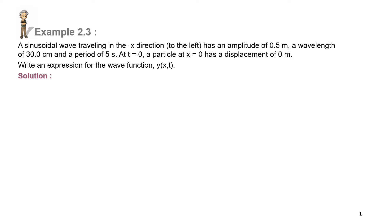Example 2.3. A sinusoidal wave traveling in negative direction, which means to the left, has an amplitude of 0.5 meter, a wavelength of 30 centimeter, and period of 5 second. At t is equal to 0, a particle at x is equal to 0 has a displacement of 0 meter. So, the question asks to write an expression for the wave function y in terms of x and t.